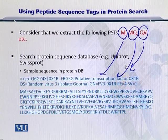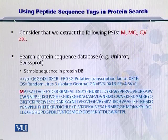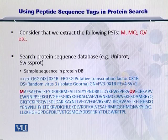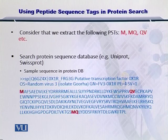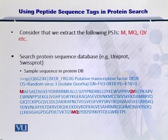Let's search for M in this protein. Yes, we have found an M — it is the first amino acid. How about MQ? We have a QV, and QV has been found within the same protein. And yes, we have found an MQ as well. So this protein reports all of these peptide sequence tags and therefore is a very strong candidate. In this way, you can compare the protein sequence against the peptide sequence tags and arrive at the number of matches for each protein.